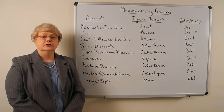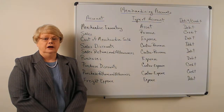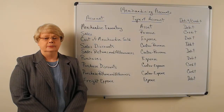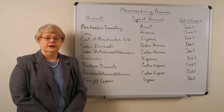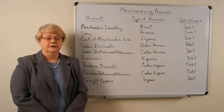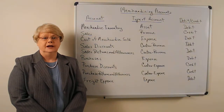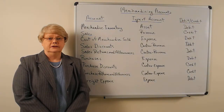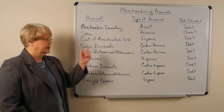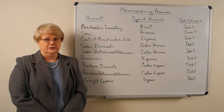Under a periodic system, we do not keep a record of inventory all during the year. In fact, the balance in our inventory account is the balance at the beginning of the year. In order to get a balance at the end of the year, we must take a physical count of the inventory and then put a value on it. That is how we actually value our inventory at the end of the year. We do not have a cost of goods sold account under a periodic system because we're not keeping a record of all of those sales.